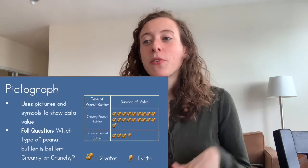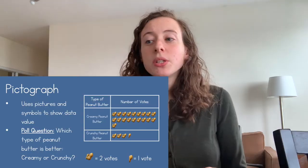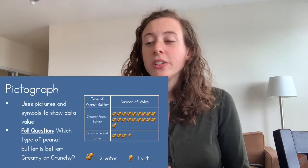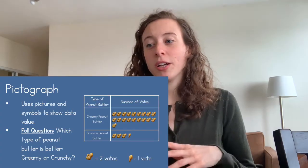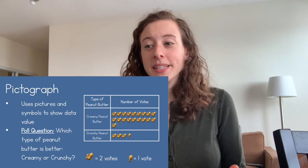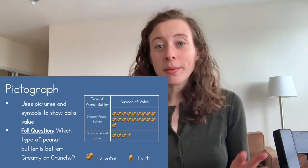To teach you more about graphs, I decided to poll people in my community — my friends and family — to ask them different questions so I could use real information on different types of graphs. First is the pictograph. As I said, pictographs use pictures and symbols to show data value. For my pictograph, I decided to ask the question: which type of peanut butter is better, creamy or crunchy?